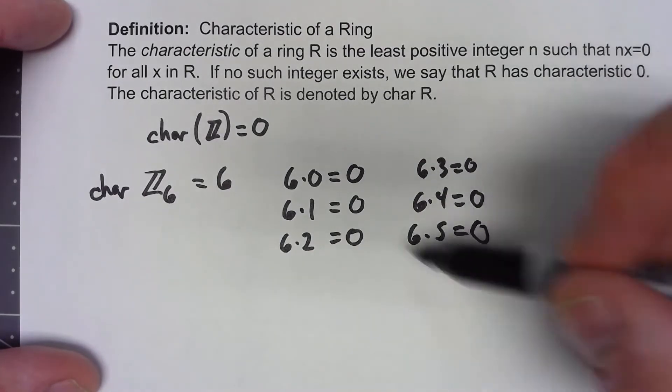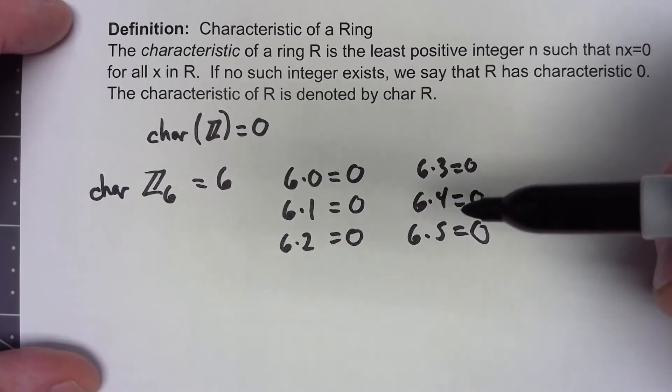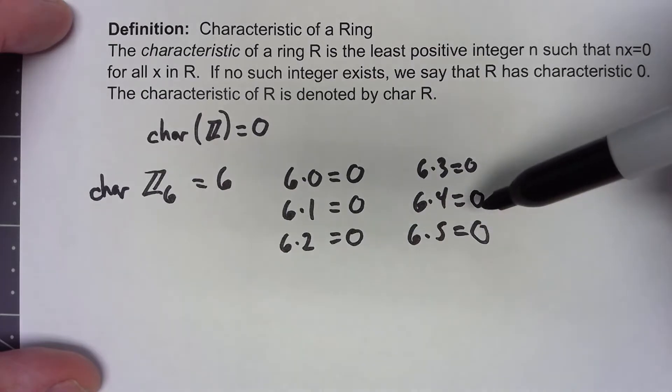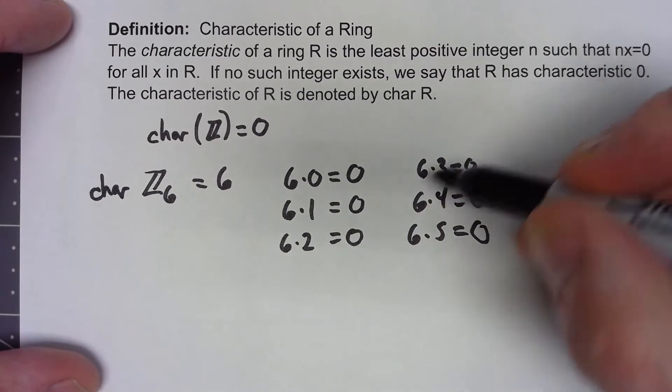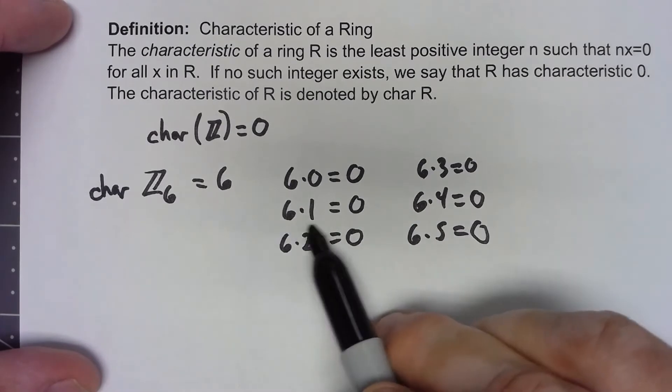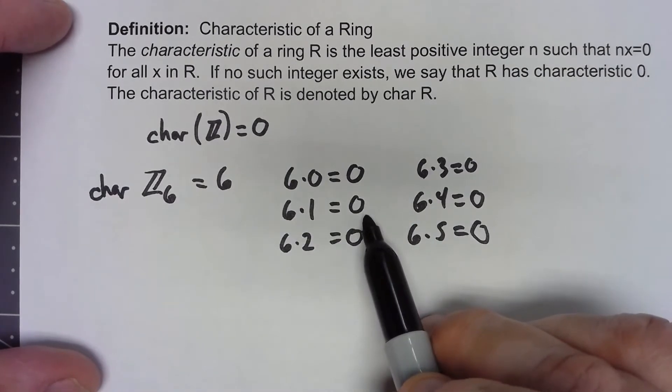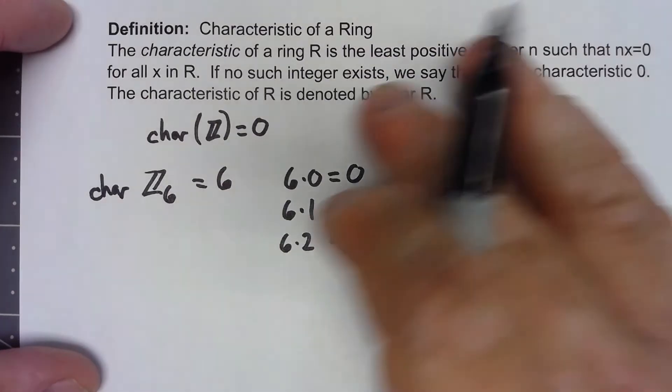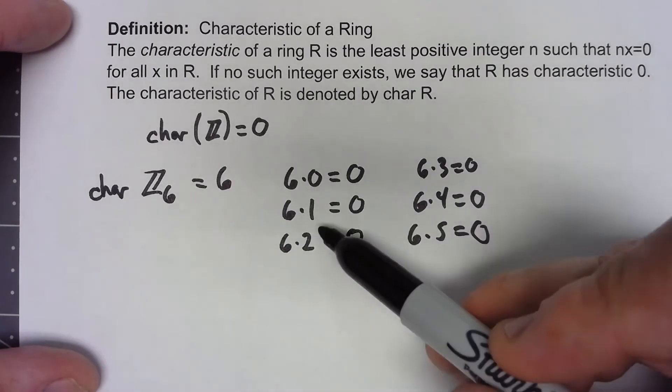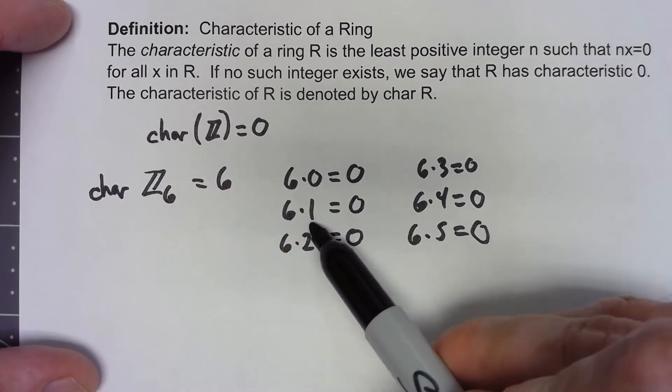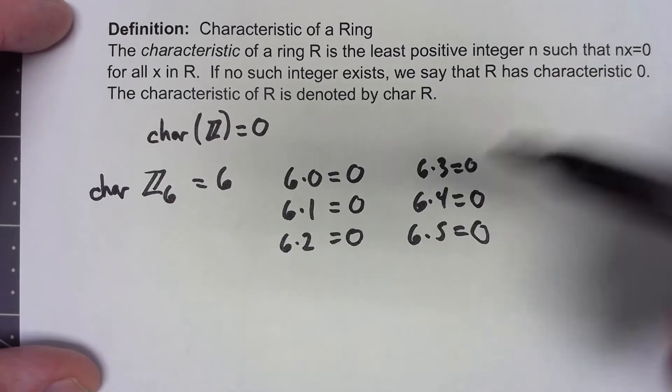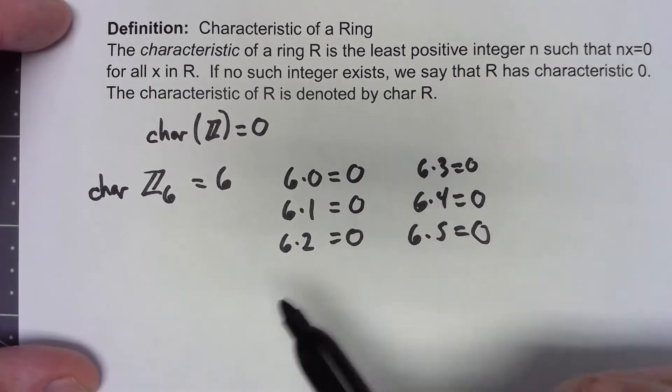Since all these multiplications are mod 6, at the same time it can't be anything smaller than that. Certainly for individual elements it could be smaller—3 times 2 equals 0—but 3 times 1 gives us 3. It has to be the same integer that works for all elements of the ring, and specifically anything less than 6 when multiplied times 1 is going to give me that number instead of 0. So 6 is the smallest one for which it works.